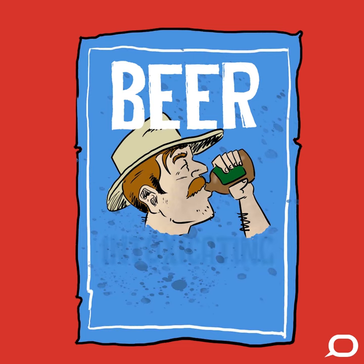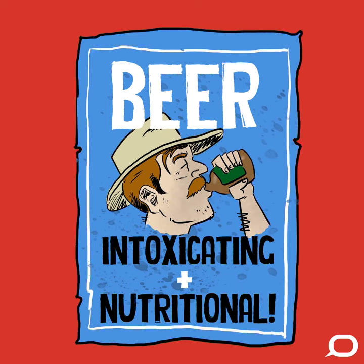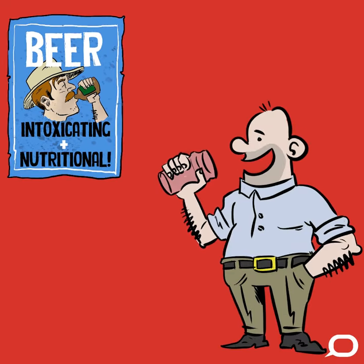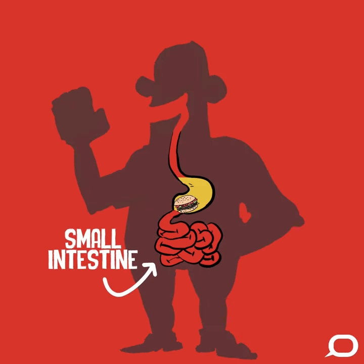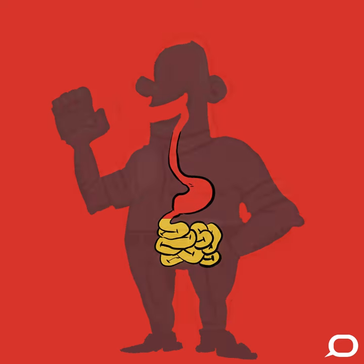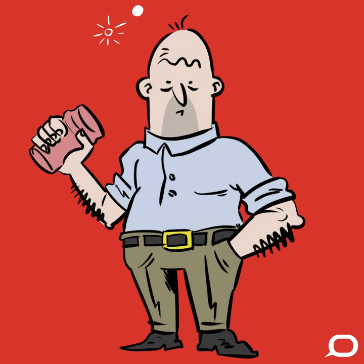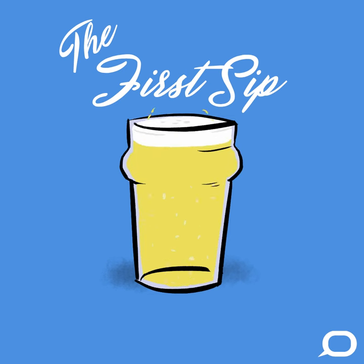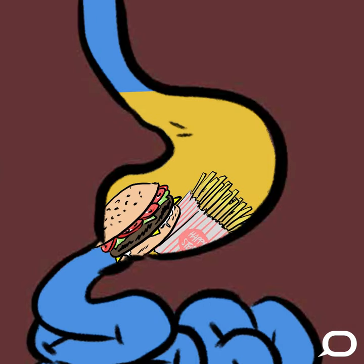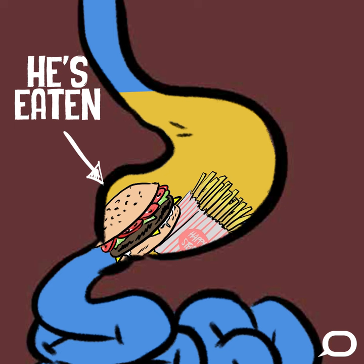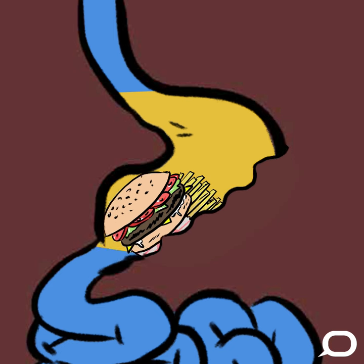Ethanol doesn't easily dissolve into oils and fats, although fats and oils can dissolve into it. As well as being intoxicating, ethanol is also a nutrient, but it's most readily converted to fat. Like most nutrients, it's most easily absorbed into our system by the small intestine, which means that what you have in your stomach can make a very big difference. When you take your first sip of, say, beer, it ends up in your stomach. What happens next depends a lot on whether you've eaten or not. If you have eaten, the alcohol is effectively trapped in your stomach while it works to break up the solid food.